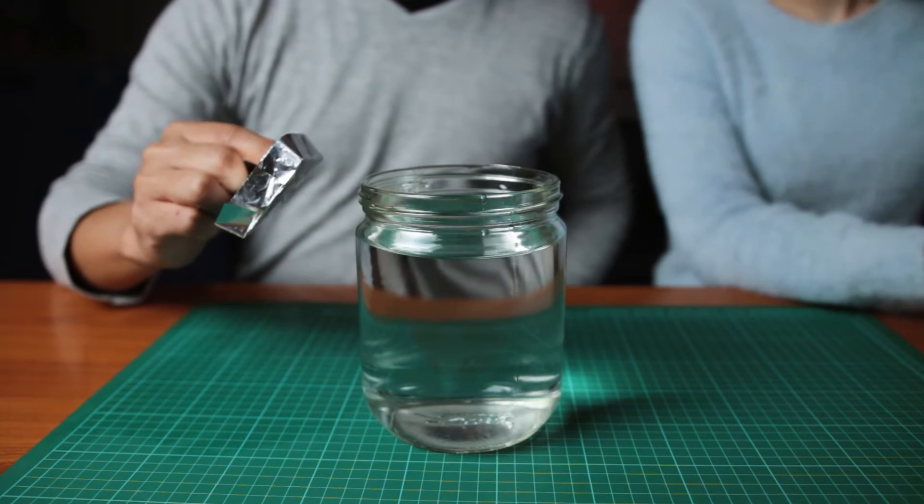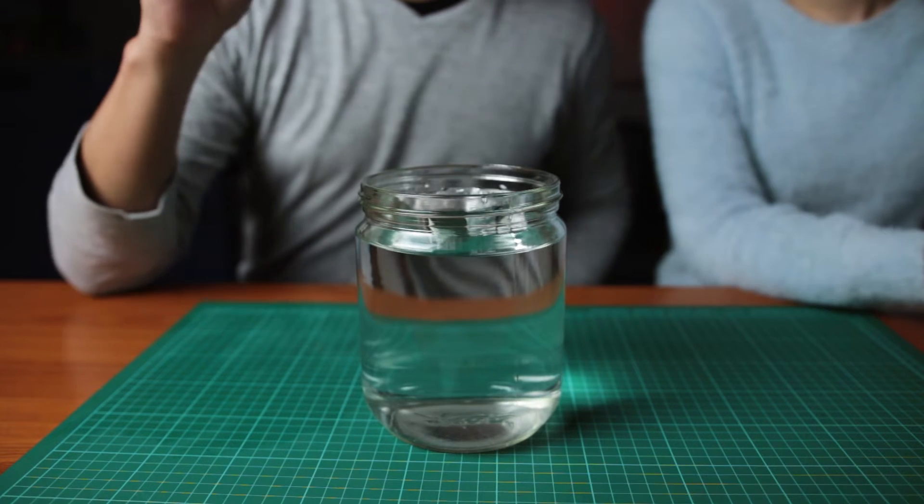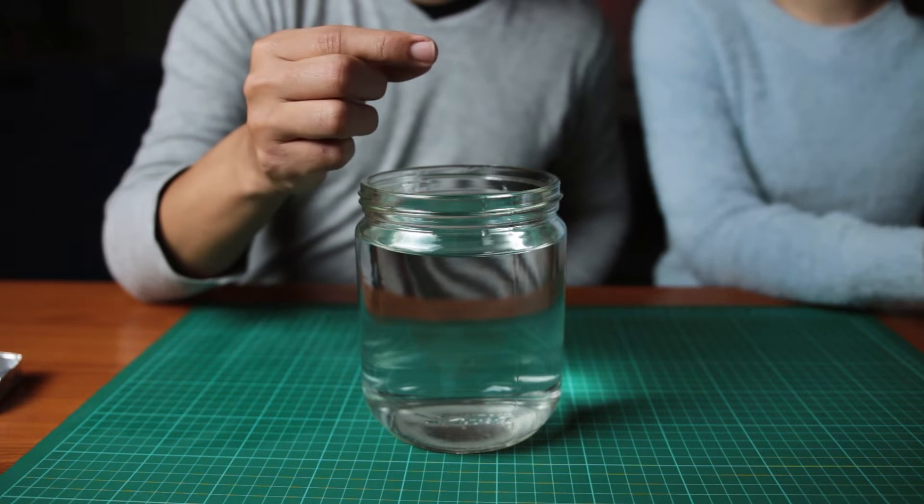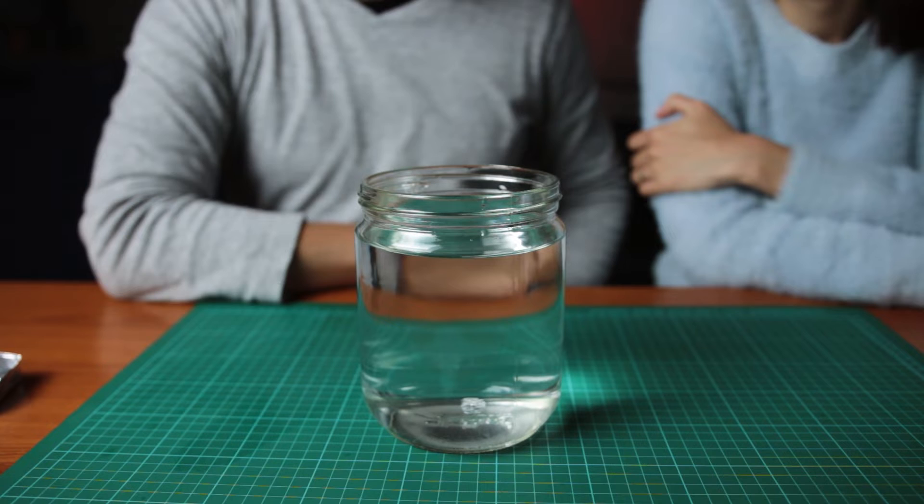Now, if I drop the box into the jar, it will float. If I drop the cube into the jar, it will sink. But why?